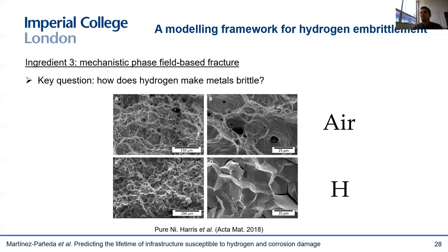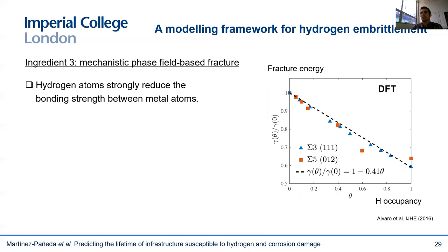The key question I wanted to answer was: how does hydrogen make metals brittle? How can a metal that fails in a ductile manner through microvoid coalescence exhibit very brittle behavior in the presence of hydrogen, with grain boundary decohesion as seen in nickel? The goal is to capture this ductile-to-brittle shift without ad hoc criteria, just by explicitly resolving the mechanisms. Our rationale is based on three main ingredients. First, atomistic calculations show that the bonding strength between metal atoms is reduced with hydrogen occupancy. A plot of surface energy versus hydrogen coverage at grain boundaries in nickel obtained with DFT shows that if coverage is close to one, the bonding strength is reduced by approximately 40%.